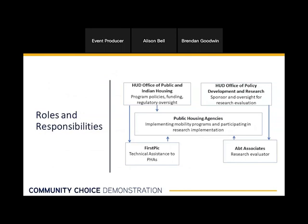The demo is pretty large scale as far as demonstrations go. There's a total of 12 PHAs involved, two offices at HUD, a technical assistance provider, and a research evaluator — along with a lot of families once services begin. Each entity has a different role and responsibility. The PHAs are at the center of the demonstration — they're the ones working directly with families, implementing mobility programs, and participating in the research. HUD's PAH office handles program policies, funding, and regulatory oversight. Our partner office, PD&R, sponsors the evaluation and provides oversight. First Pick is the technical assistance provider, working closely with PHAs on best practices and program materials. And APT Associates is the selected independent evaluator.